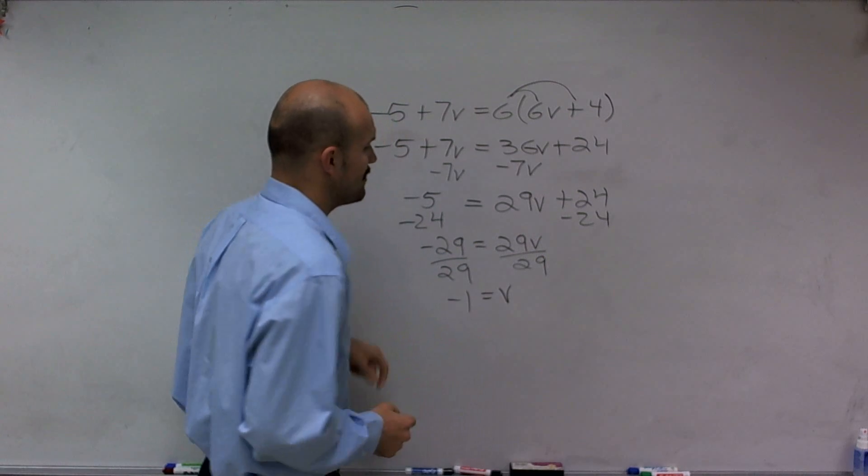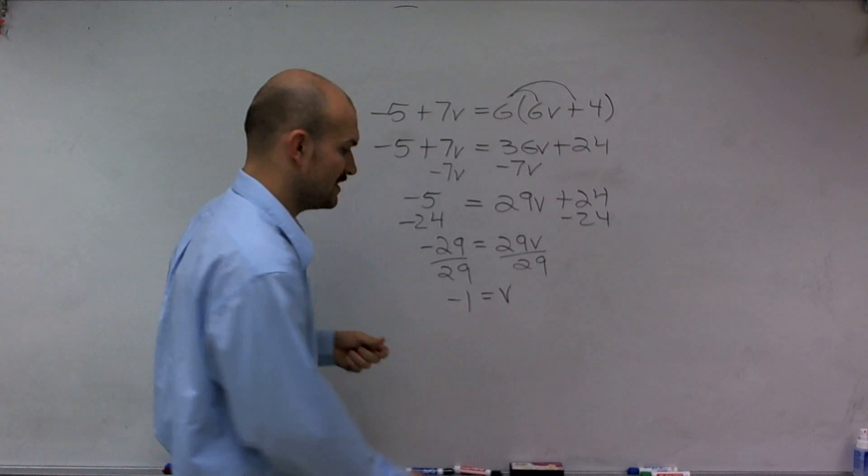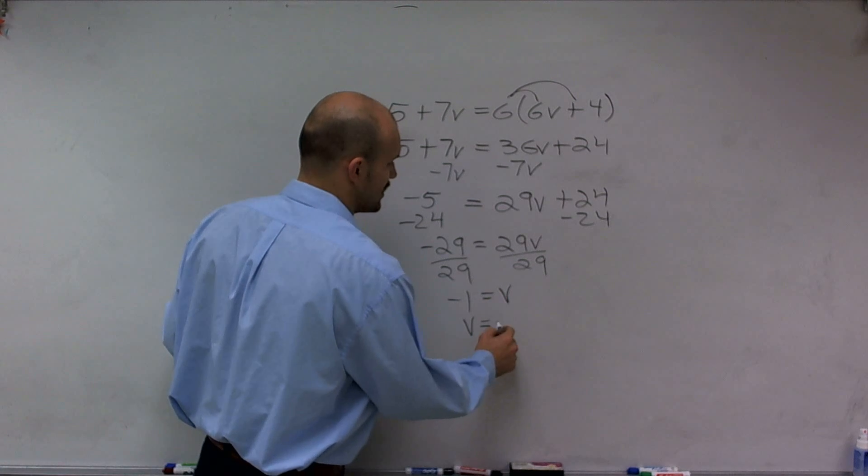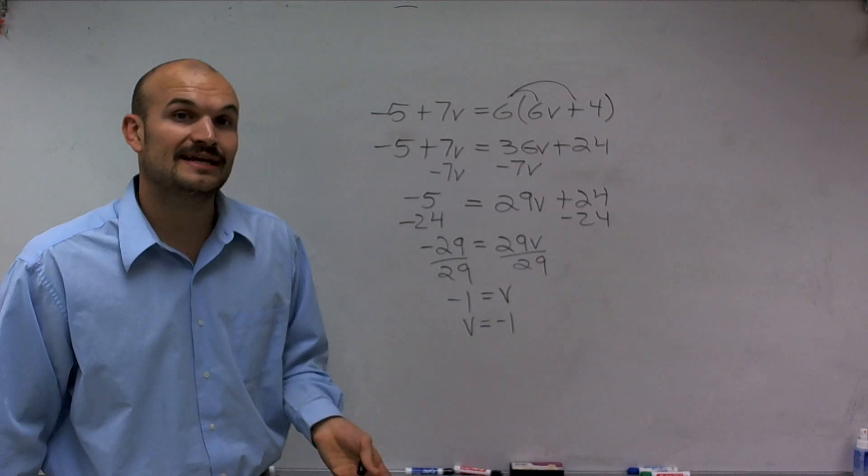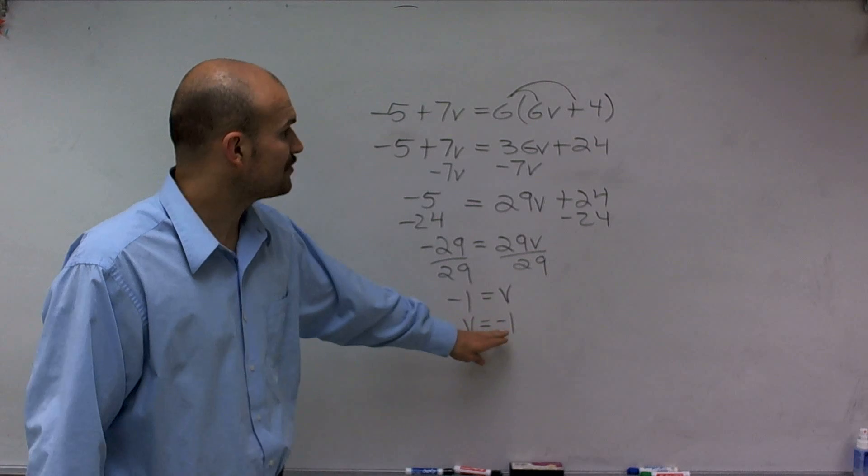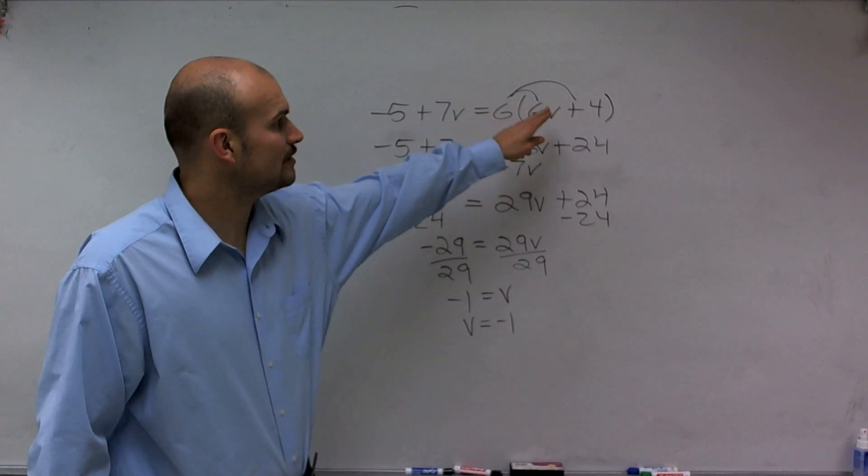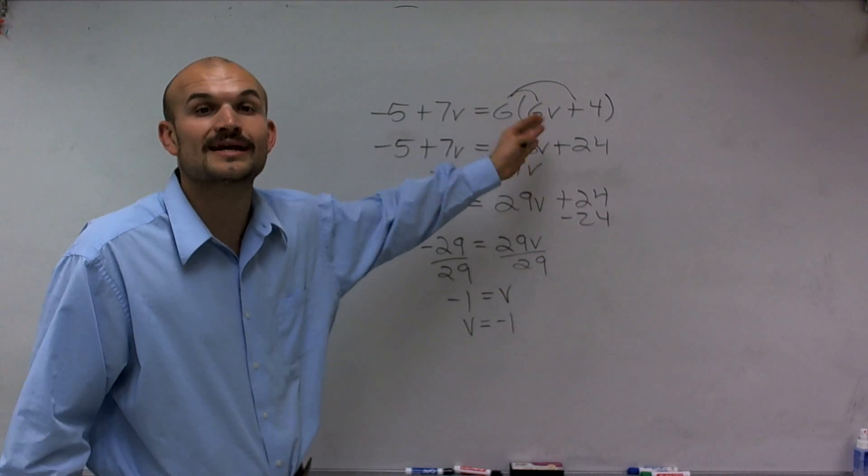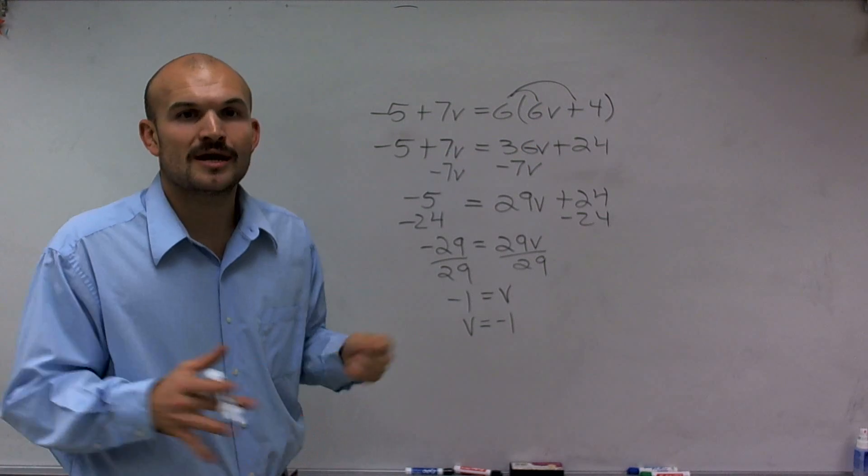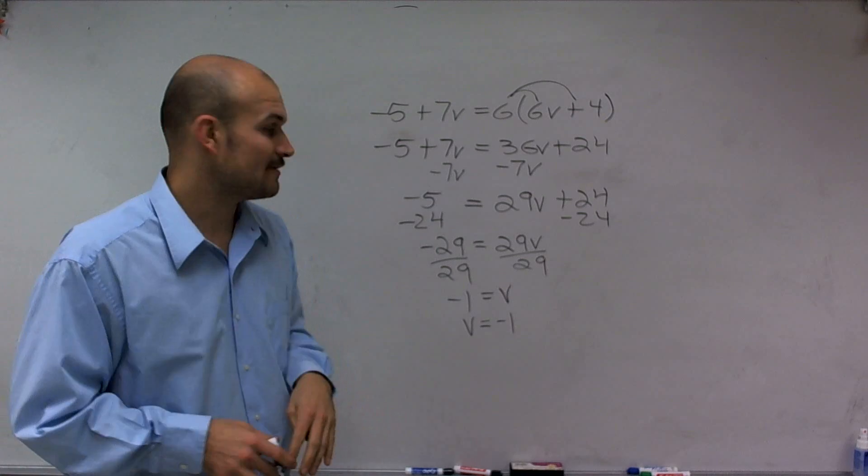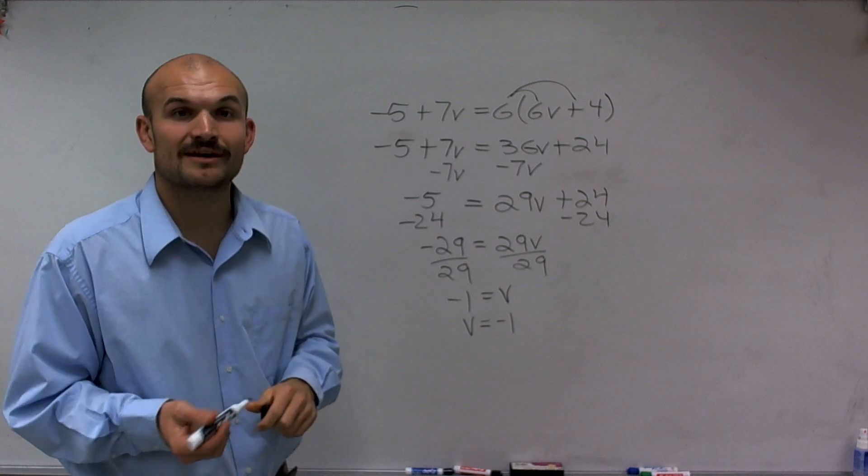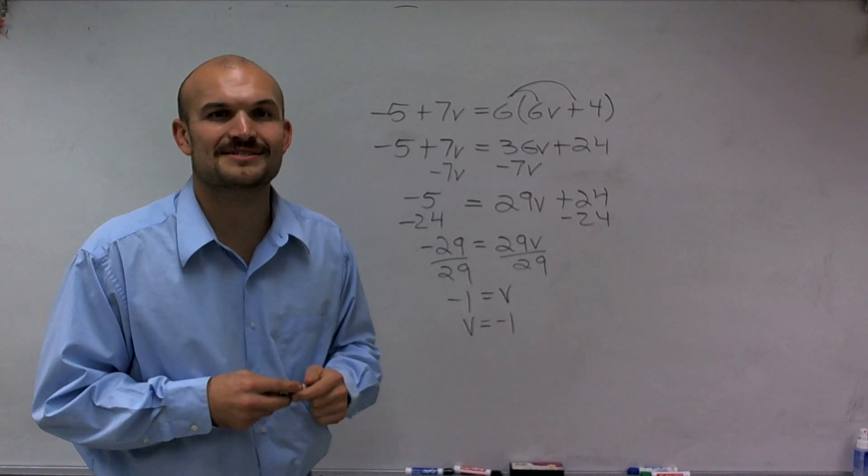So therefore, I have now isolated my variable, where negative 1 equals v. A lot of times, we just like to switch that around. So therefore, I can say v equals negative 1. Now, I can plug in negative 1 in for v in my original equation and simplify and make sure my equation is equal to each other. But to keep this video kind of short for you, that's going to be your final value. There you go. Thanks again for watching. Bye.